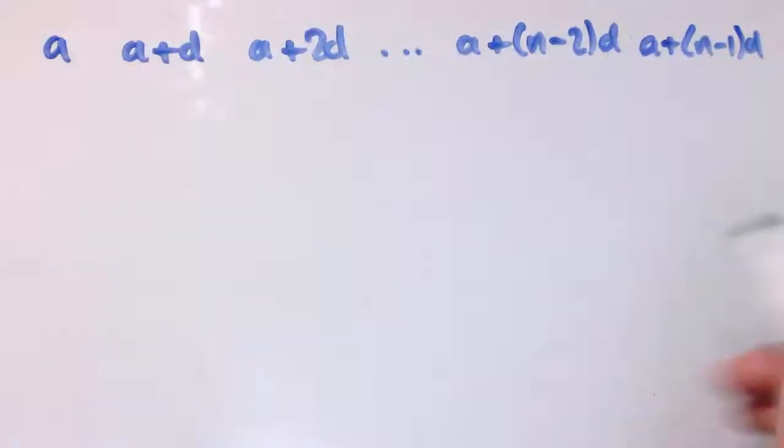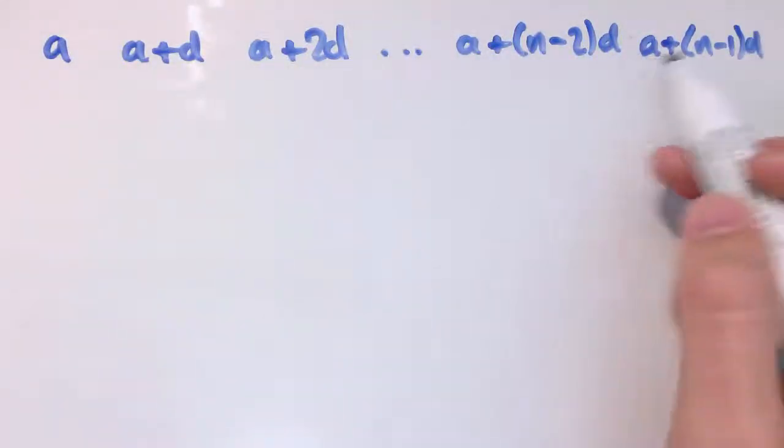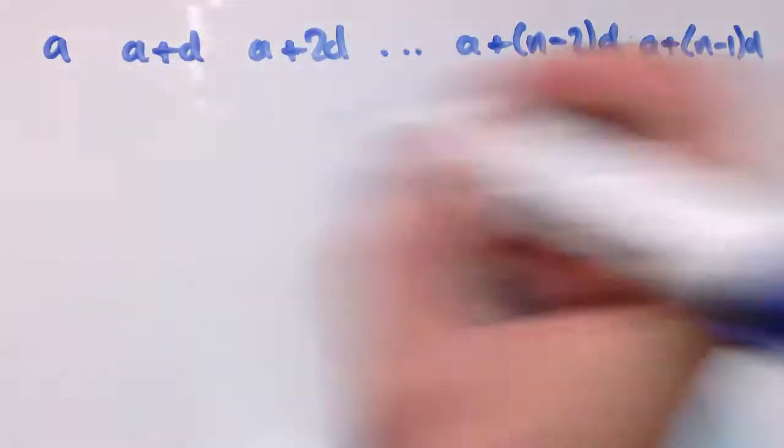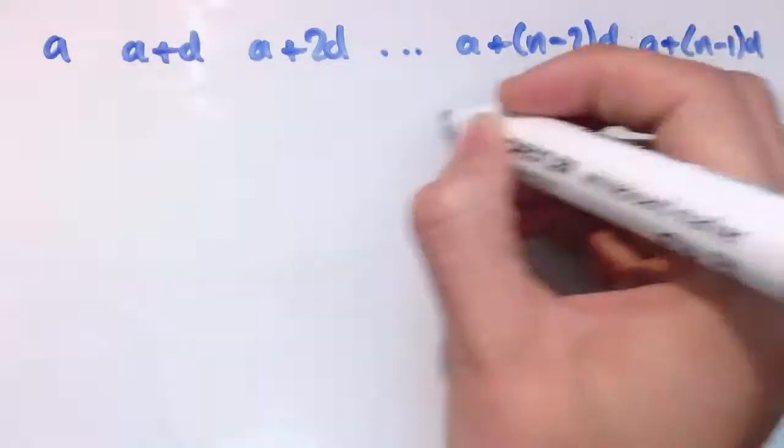Of course, to do that a bit more formally, just to check that this works in general, well, if I took that sequence a, a plus d, a plus 2d, and let's say it's got n terms, so the last term here is a plus n minus 1d, the one before it is a plus n minus 2d. If I write this backwards, so I get a, a plus d, etc. And actually, let's just have, and we can see that if I put this term here, so a plus n minus 1d.